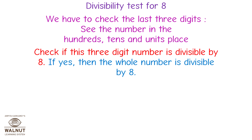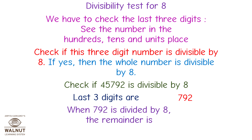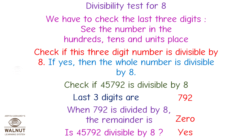Divisibility test for 8. We have to check the last three digits. See the number in the hundreds, tens, and units place, and check if this three-digit number is divisible by 8. If yes, then the whole number is divisible by 8. Check if 45,792 is divisible by 8. Last three digits are 792. When 792 is divided by 8, the remainder is 0. Therefore, is 45,792 divisible by 8? Yes!